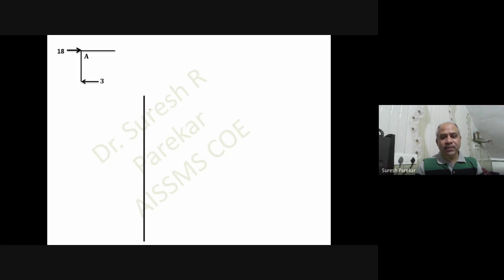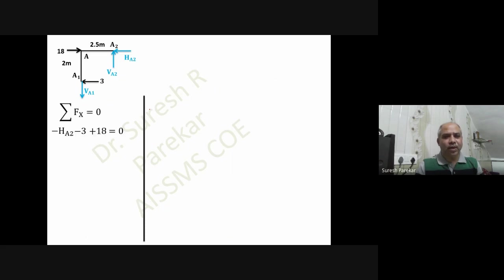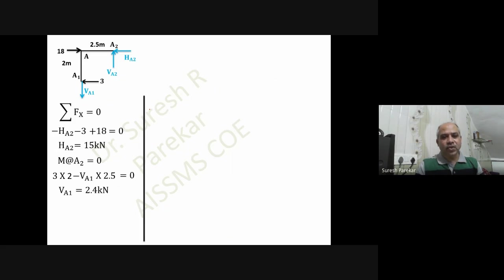For joint A, H1 is 3 kilonewtons, the column height is 4 meters, and the beam span is 2.5 meters. Taking half the height, we have three unknowns: VA1, VA2, and HA2. Summation Fx equal to zero gives HA2 equal to 15 kilonewtons. Taking moment about A2 gives VA1 equal to 2.4 kilonewtons. Summation Fy equal to zero gives VA2 also equal to 2.4 kilonewtons.